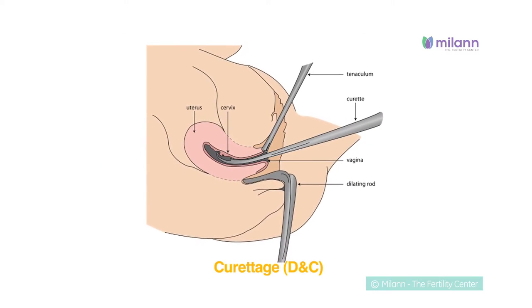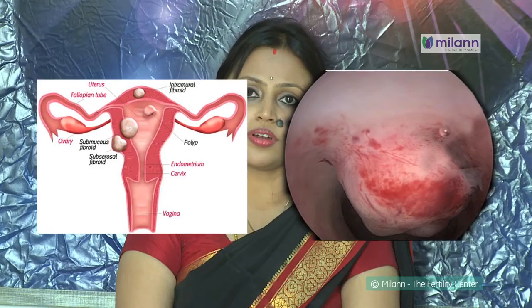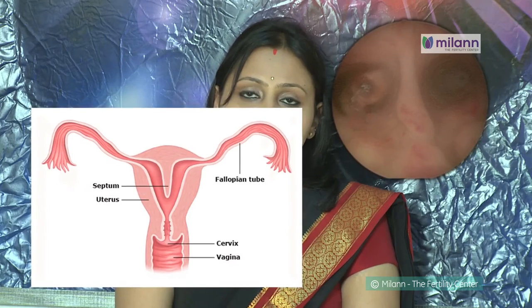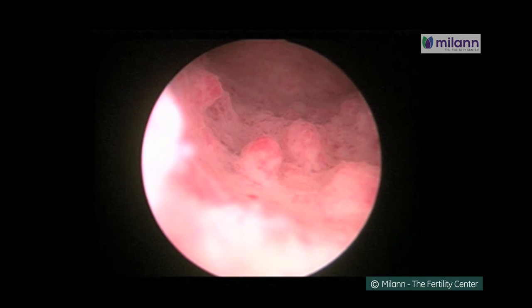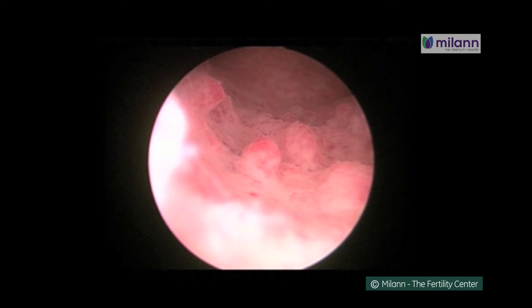Additionally, hysteroscopy can be used with other procedures such as laparoscopy, or before procedures such as dilation and curettage (D&C). There are certain abnormalities or pathologies within the uterine cavity which can give rise to abnormal uterine bleeding as well as infertility — like polyps, fibroids, adhesions, anatomical abnormalities of the uterus, as well as a thick unhealthy endometrium.